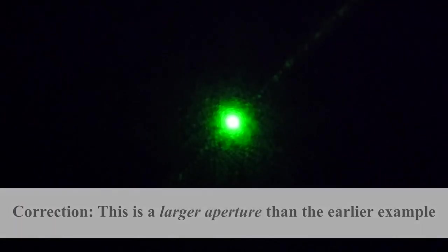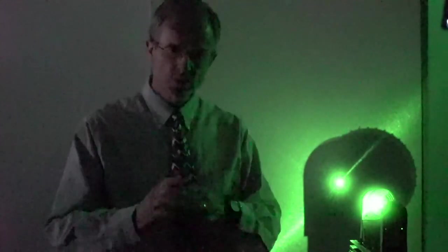This is a smaller aperture, the earlier aperture was 0.2 millimeters and this is 0.4. It may or may not be visible on the camera. It's a very, very small diffraction pattern from that circular aperture. So that is diffraction patterns from single slits and circular apertures.